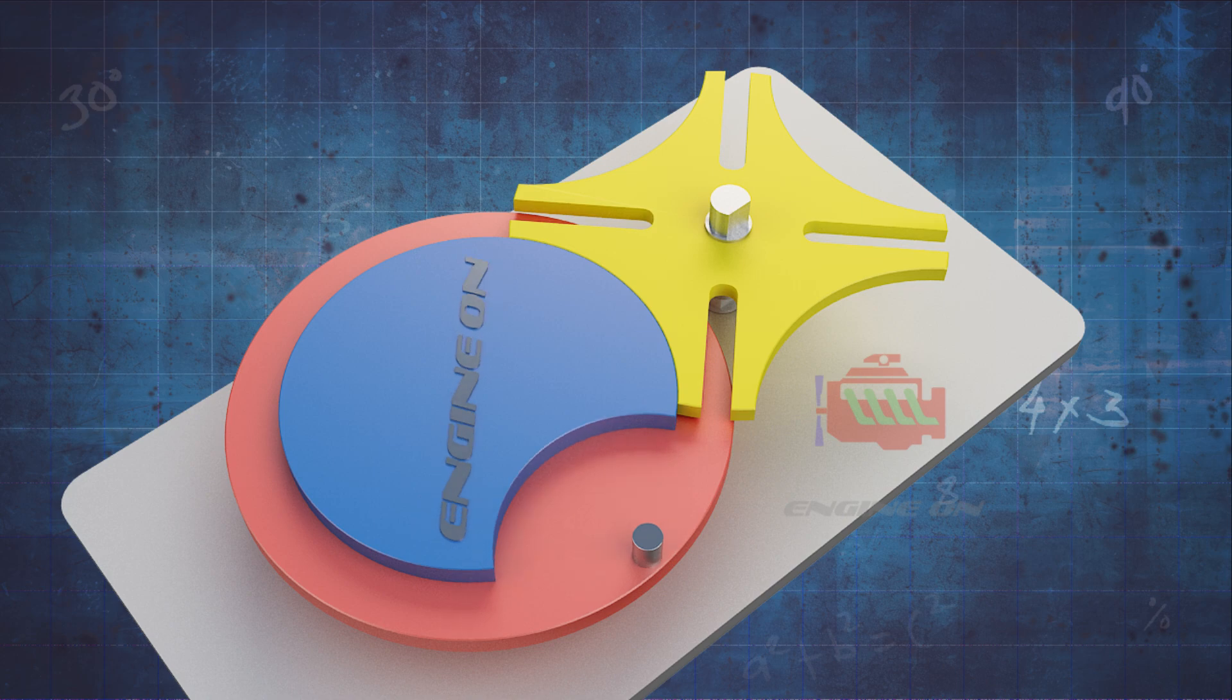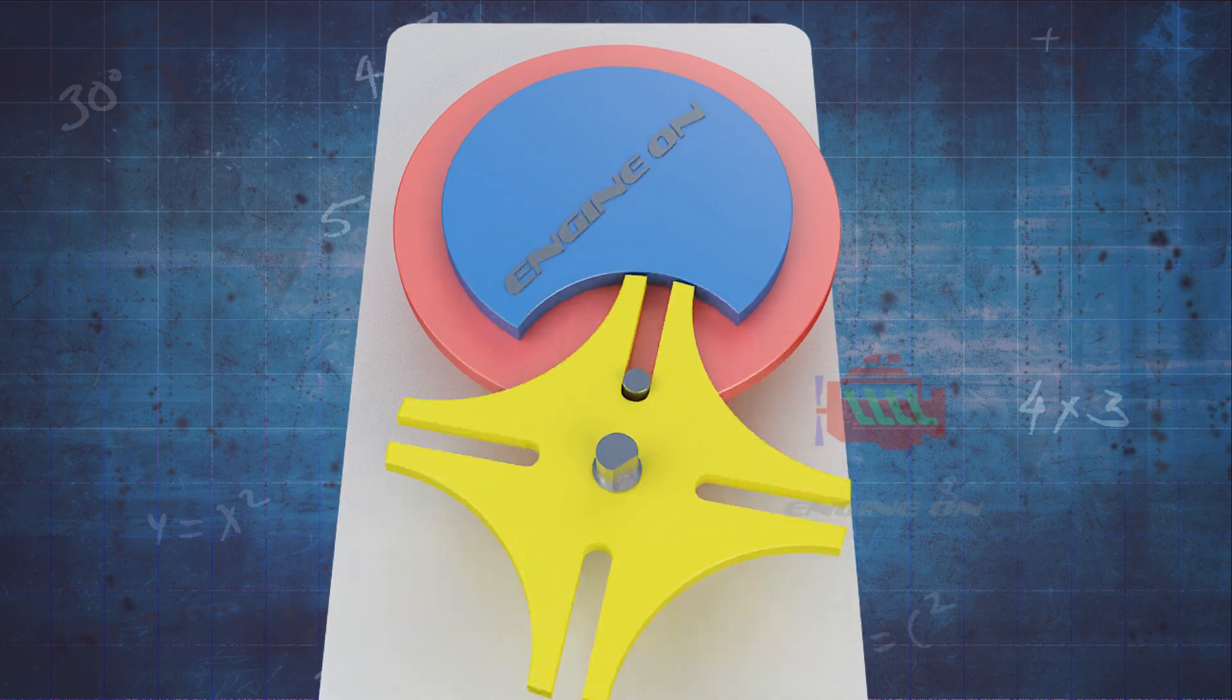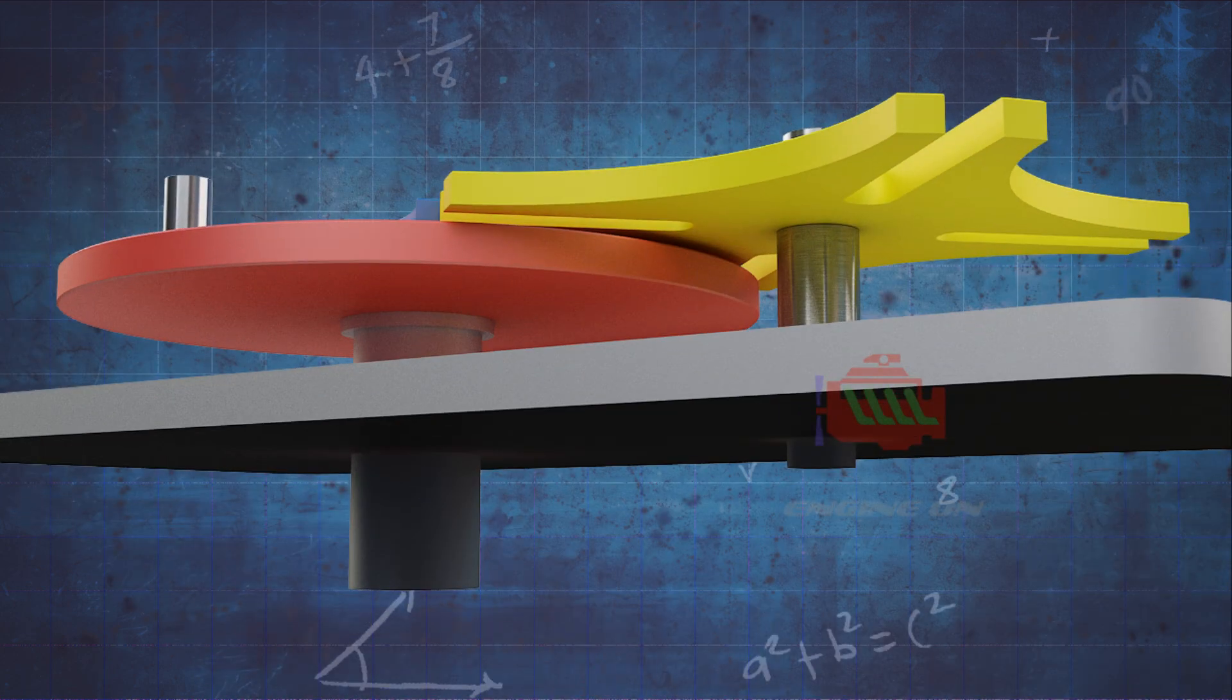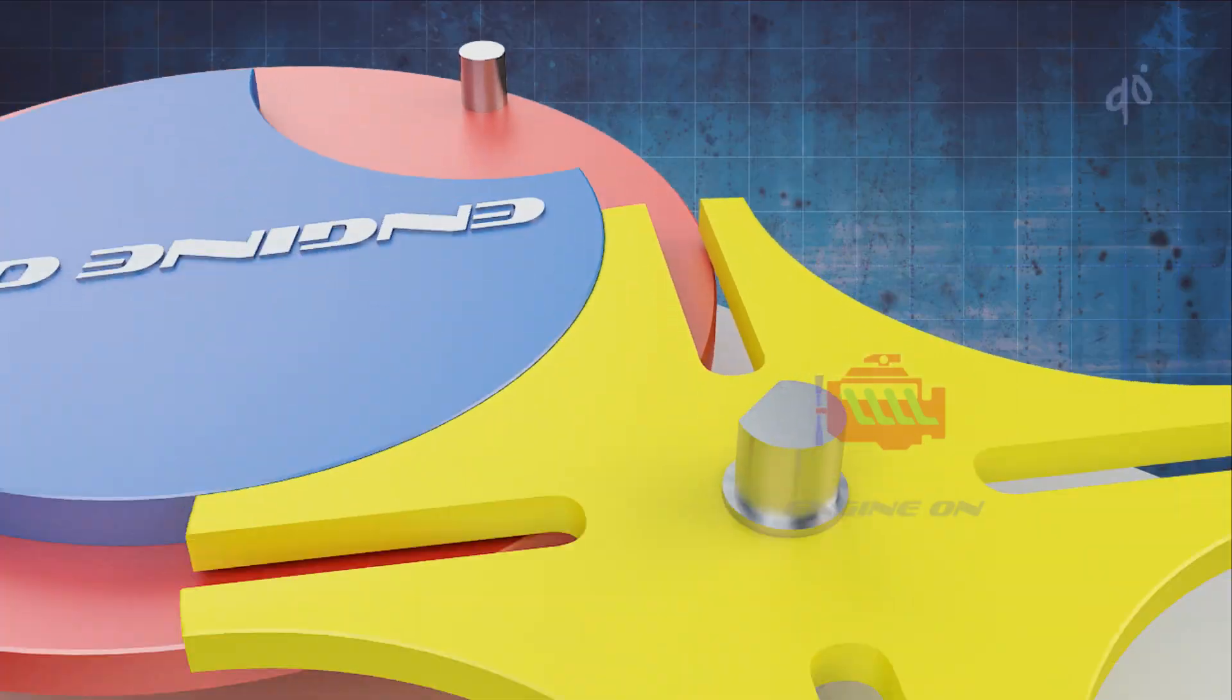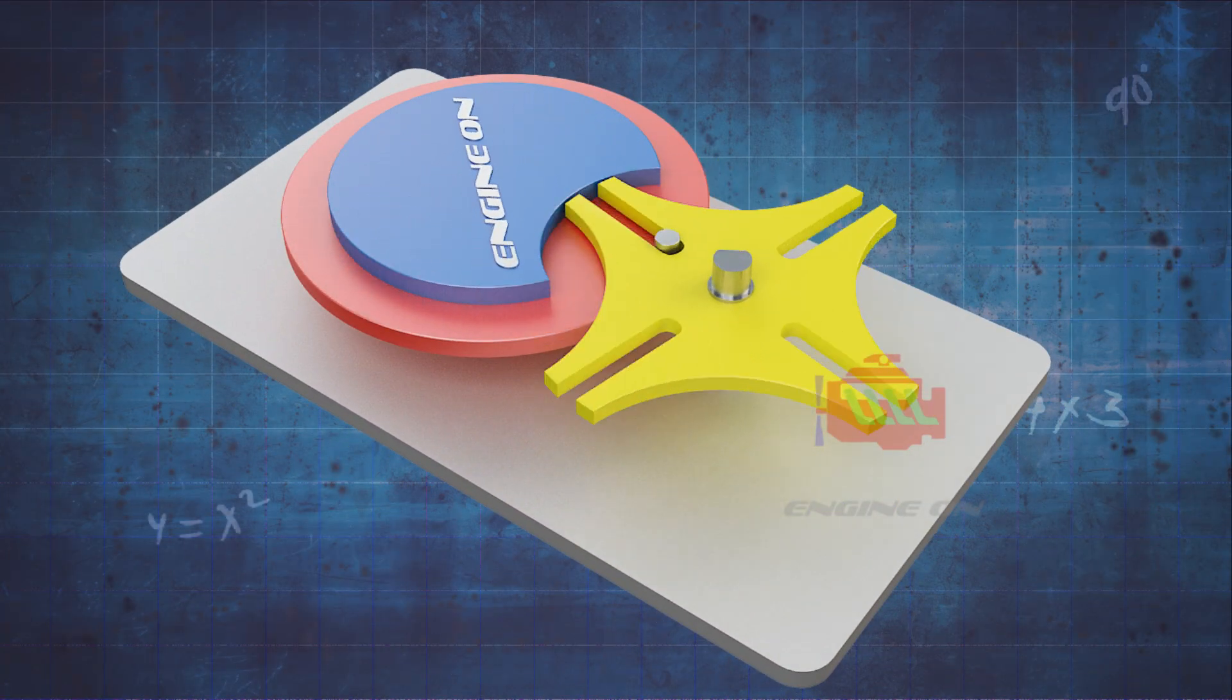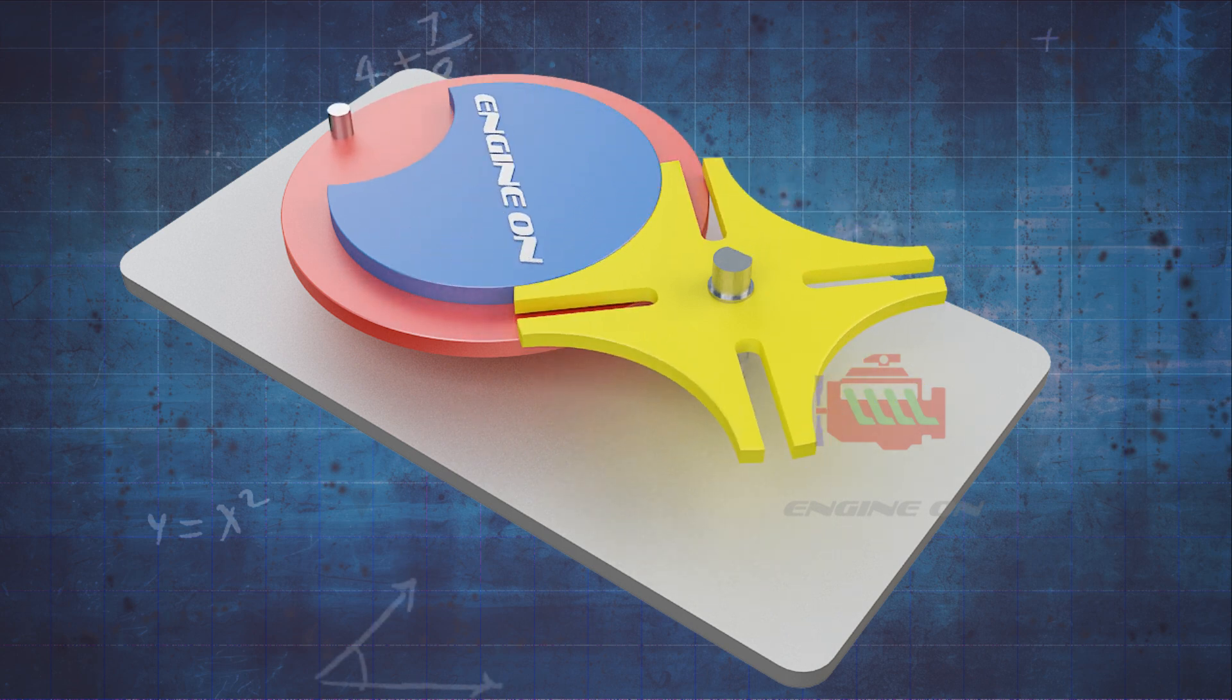A pin on the rotating drive wheel slides into a slot in the driven wheel. The pin advances the driven wheel by one step. The drive wheel's continuous motion pulls the pin out of the slot. The driven wheel stops rotating. The pin slides into the next slot in the driven wheel, repeating the cycle.